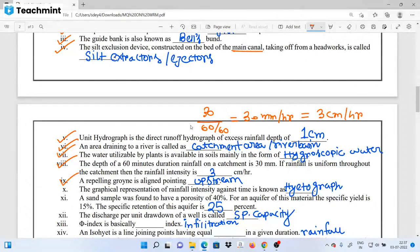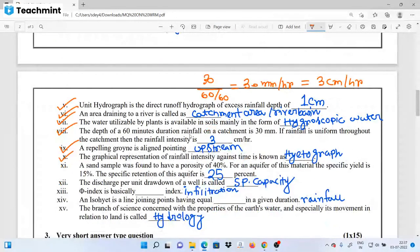Next, the repelling groin is the one pointing upstream. The graphical representation of rainfall intensity versus time is a hyetograph. Now we have a question about porosity and specific yield. Specific retention equals porosity minus specific yield.